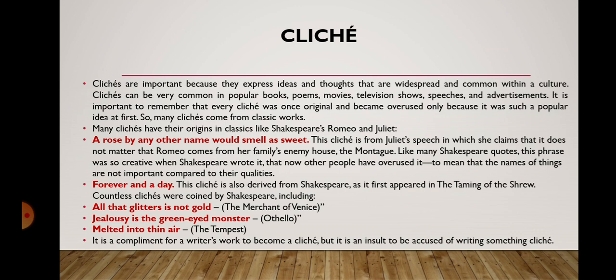Clichés can be very common in popular books, poems, movies, television shows, speeches, and advertisements. It is important to remember that every cliché was once original and became overused only because it was such a popular idea at first. Many clichés have their origins in classics like Shakespeare's Romeo and Juliet: 'A rose by any other name would smell as sweet.' This cliché is from Juliet's speech in which she claims that it does not matter that Romeo comes from her family's enemy house, the Montague. Like many Shakespeare quotes, this phrase was so creative when written that others have overused it to mean that the names of things are not important compared to their qualities.